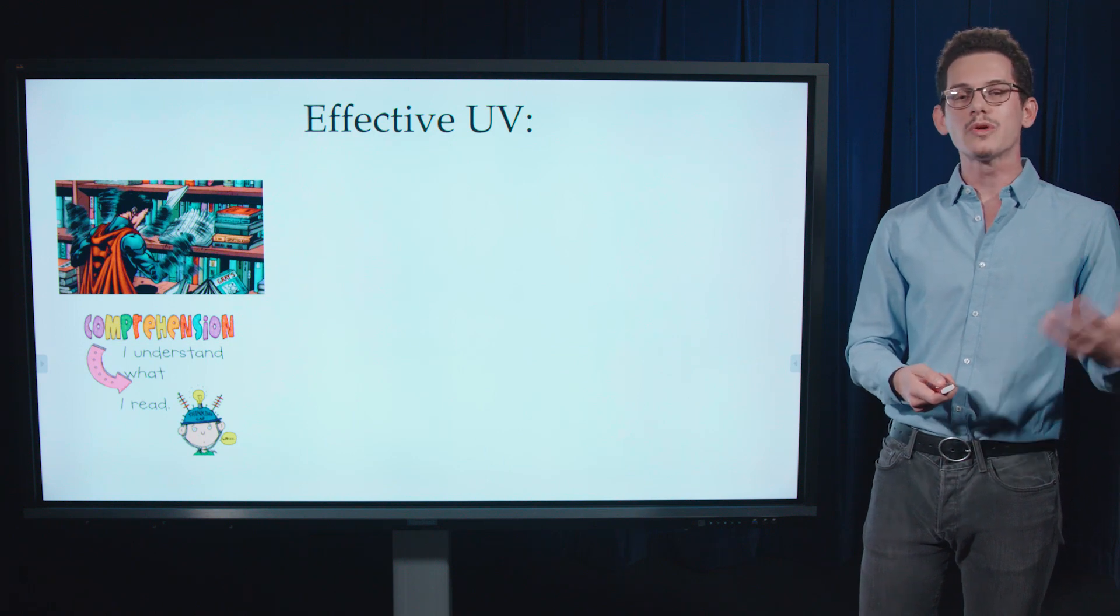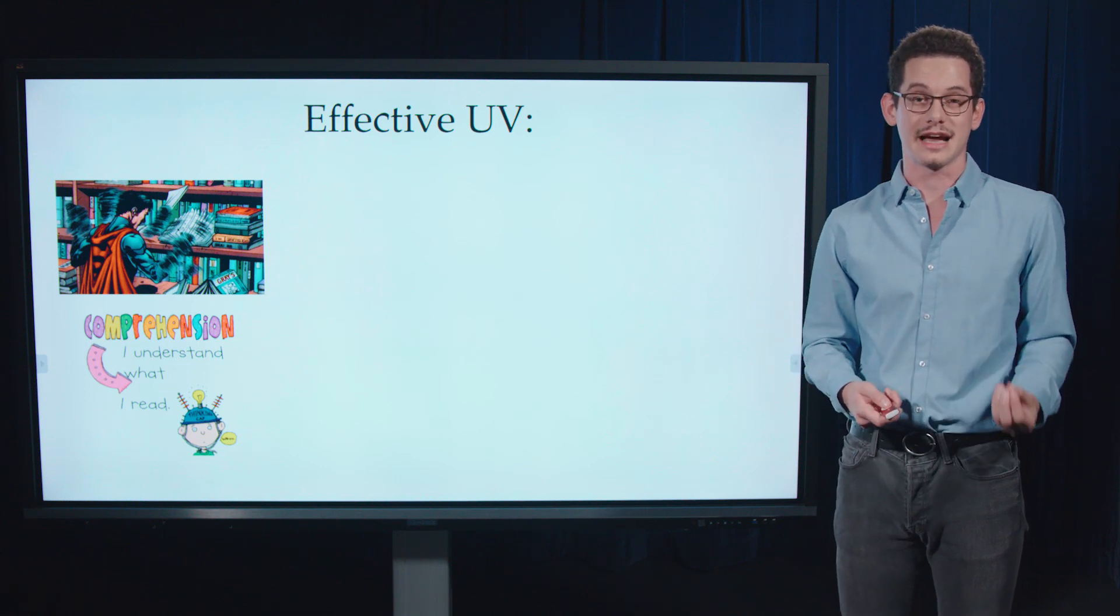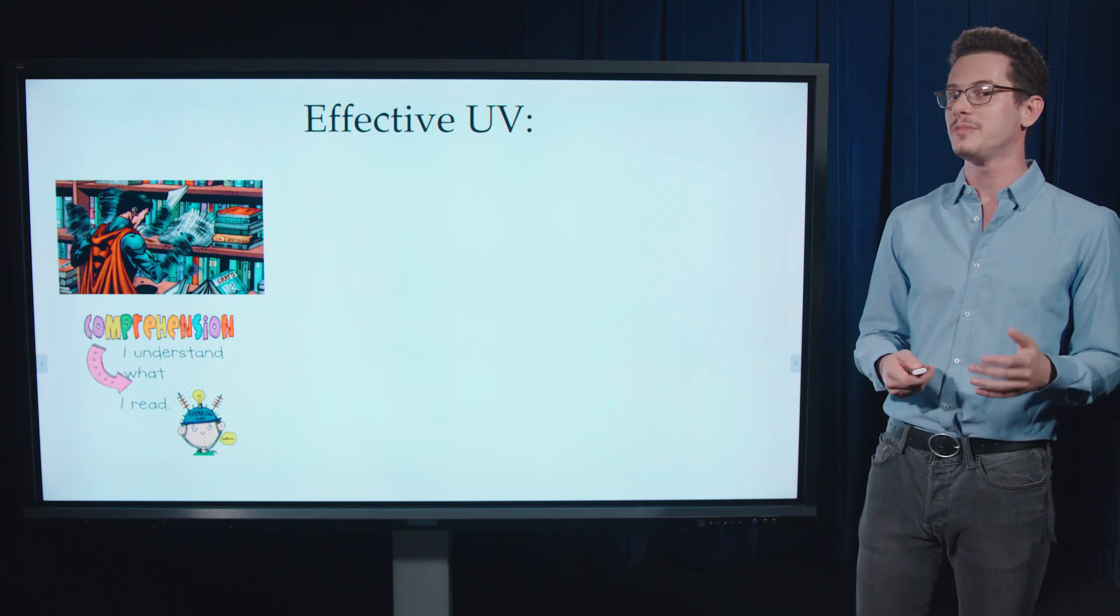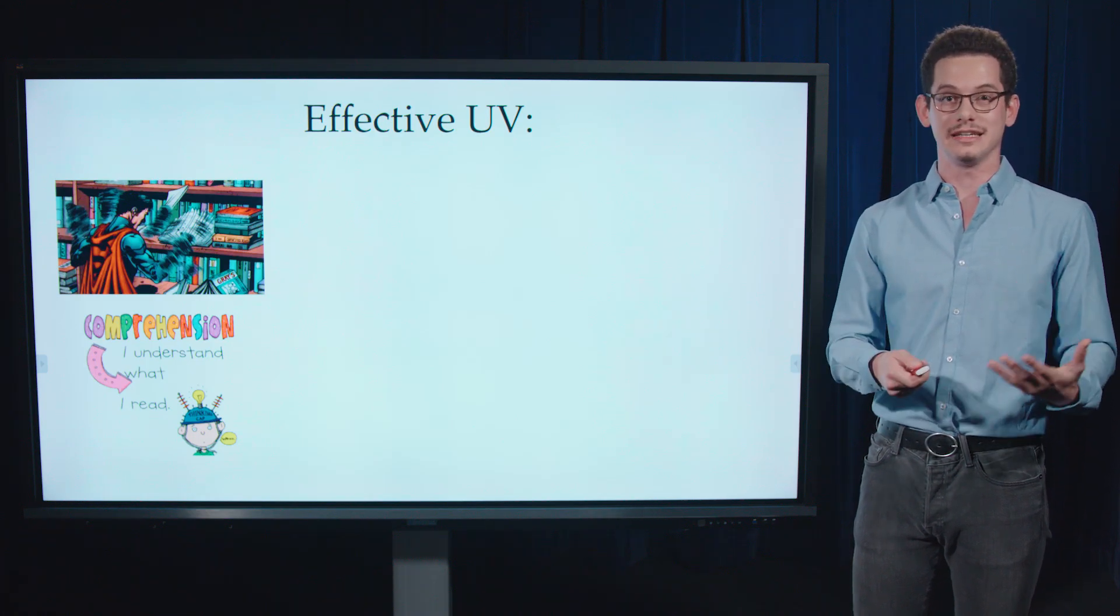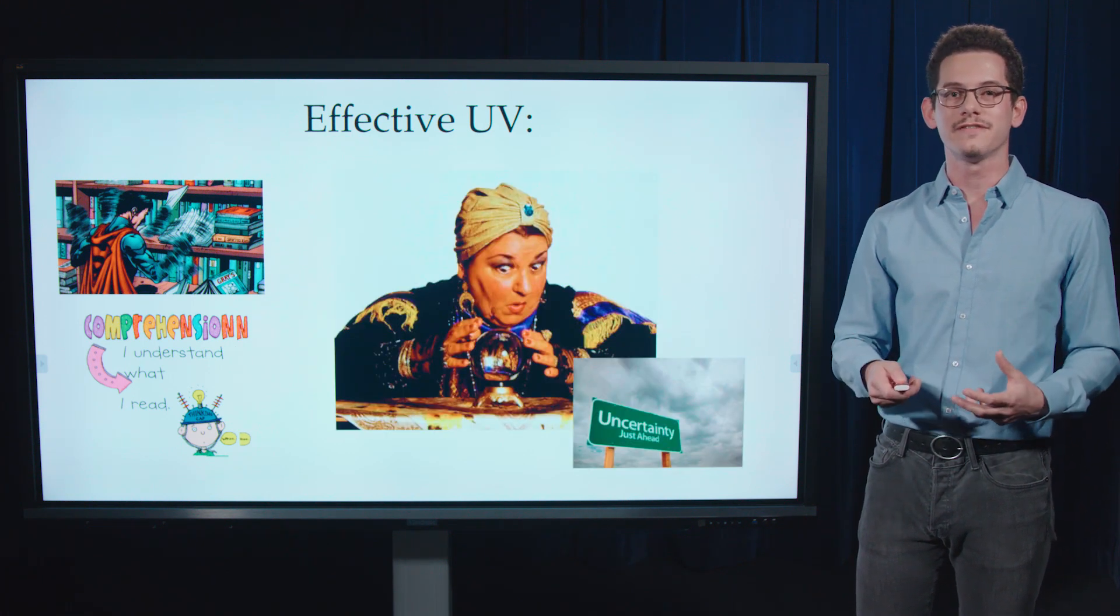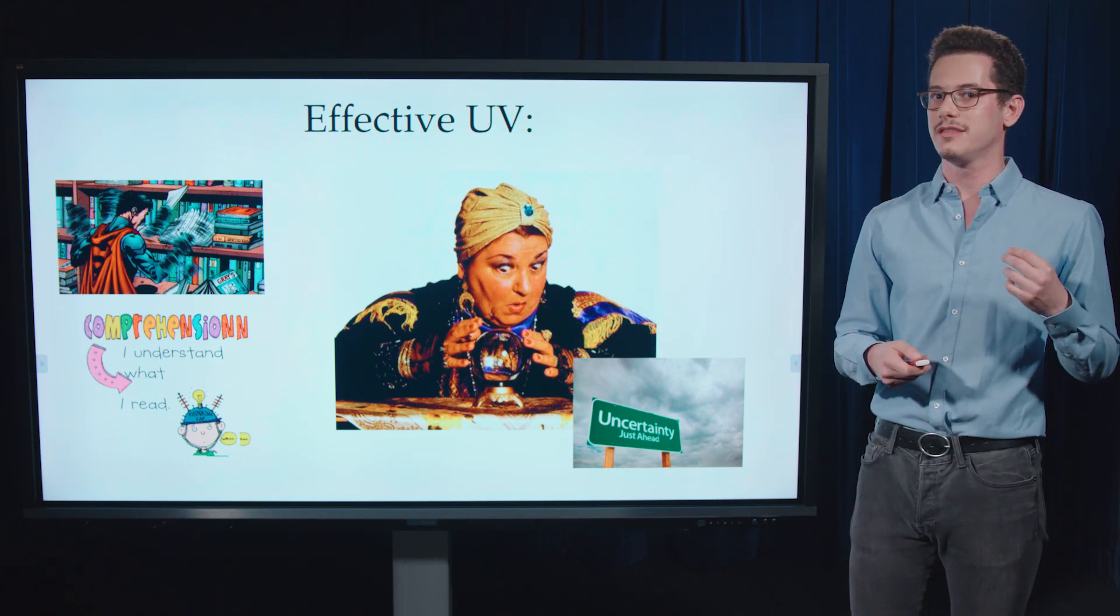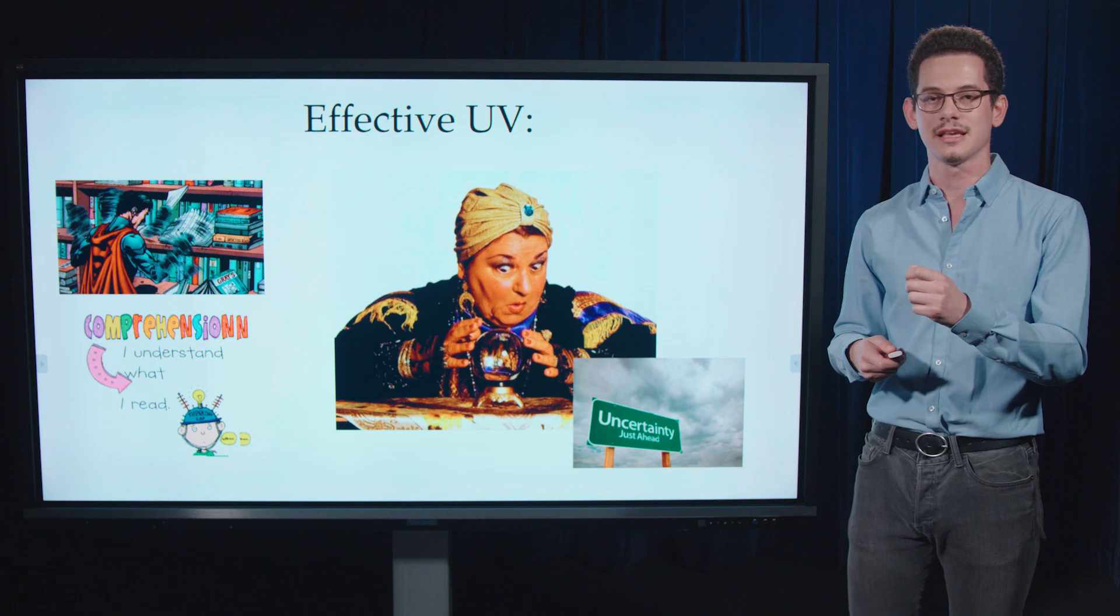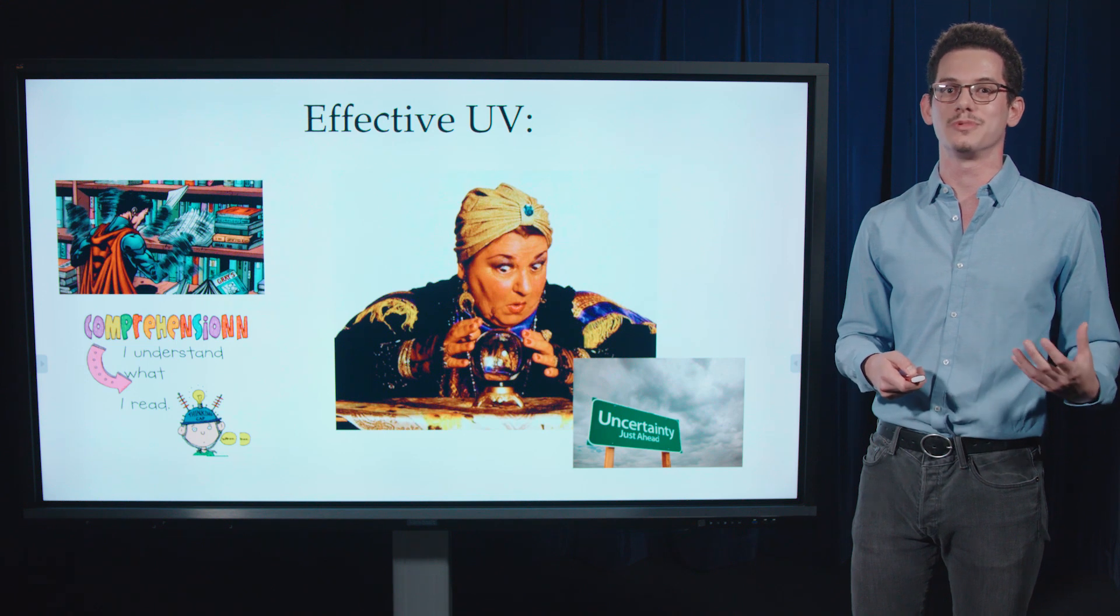And what we want to get at is UV effectiveness. So what does it mean for a UV to actually be effective? So in our experiment, a UV is effective if it can be read both quickly and accurately, if people understand what they read and if reading the map doesn't take very long. And if the UV facilitates predictions about the future that incorporate the uncertainty given in the map. So if the predictions that a user makes about next week's aftershock rate actually uses the uncertainty that was represented on the map.